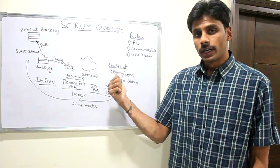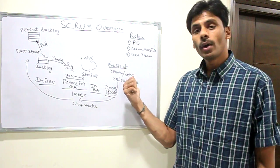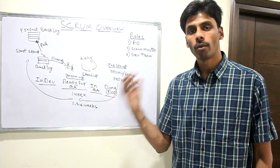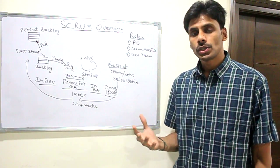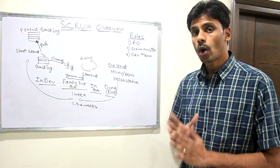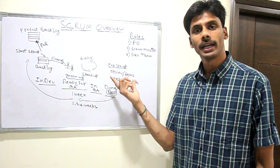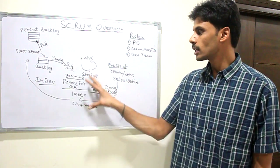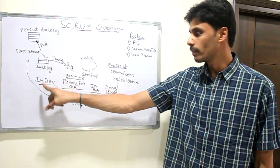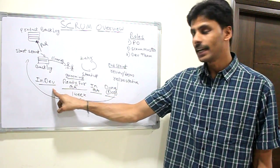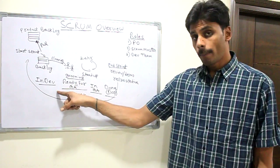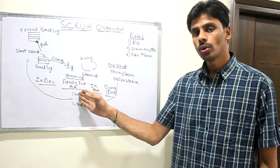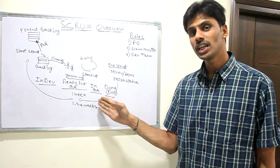At the end of the sprint, we have a review and demo session. This is important because whatever stories you would have worked on, the QA should test them. During the sprint, each of the requirements will go through the following phases: in development, ready for QA. Once the development is done, we move it to ready for QA. Then it goes into in QA.